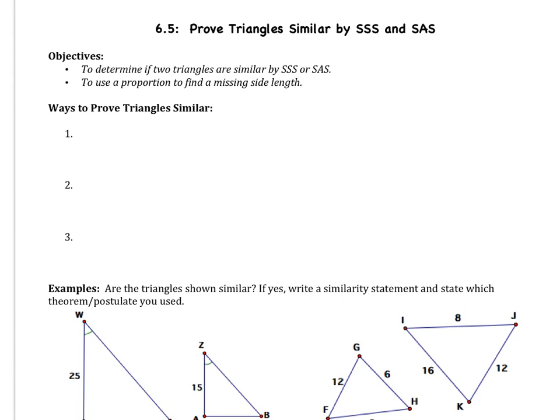Welcome to section 5, which is prove triangles similar by SSS and SAS. This is going to be similar to the last section. Last section we determined are triangles similar, yes or no, using the theorem AA. Today we're going to learn two other theorems.